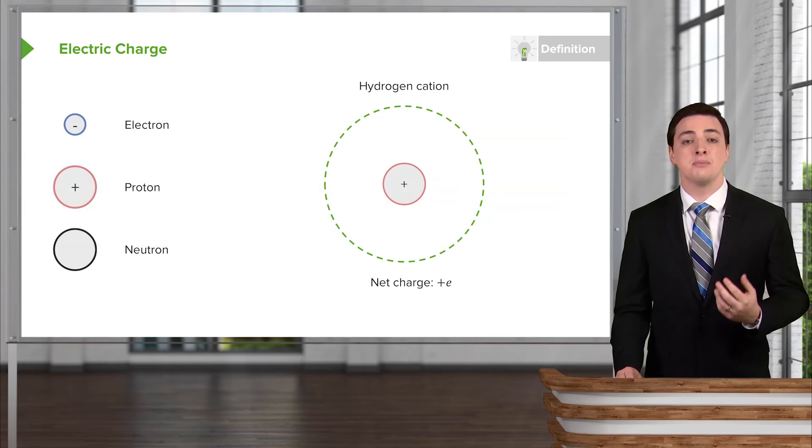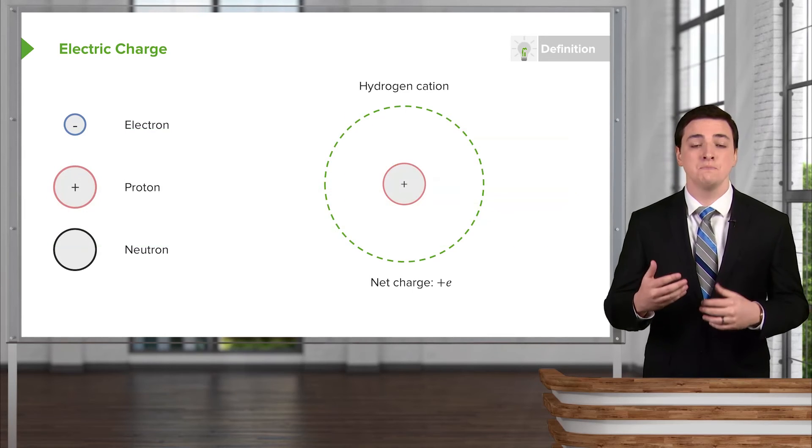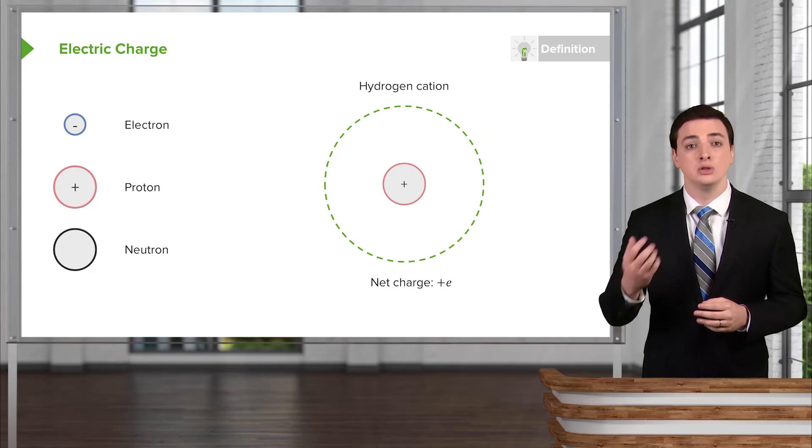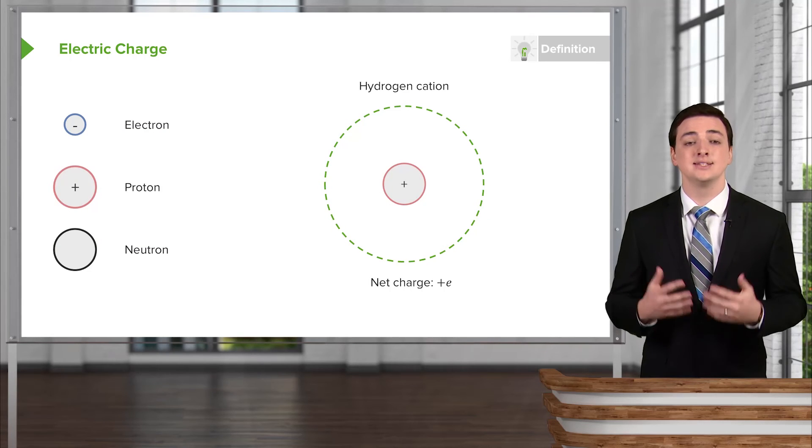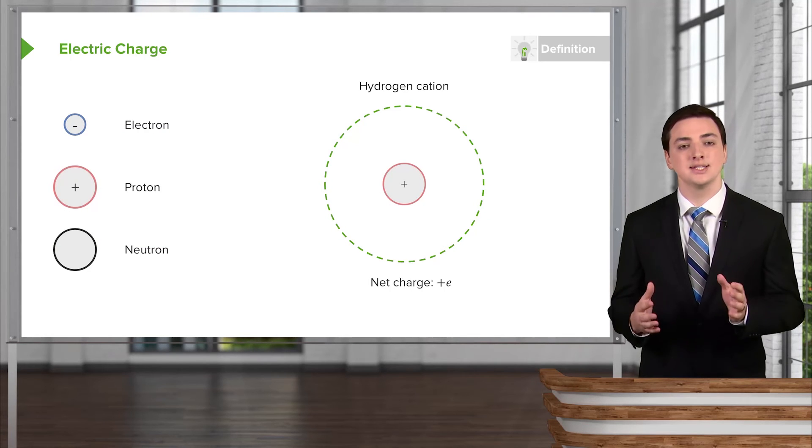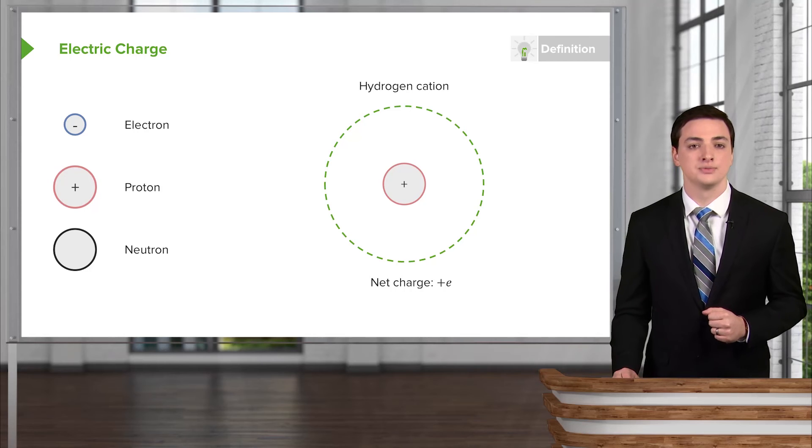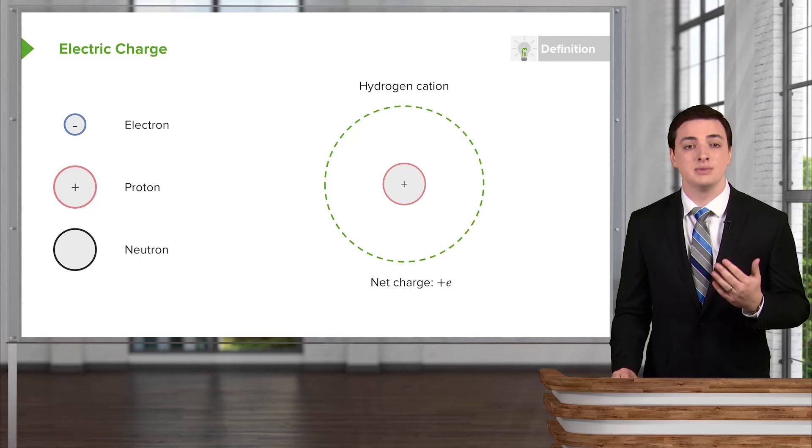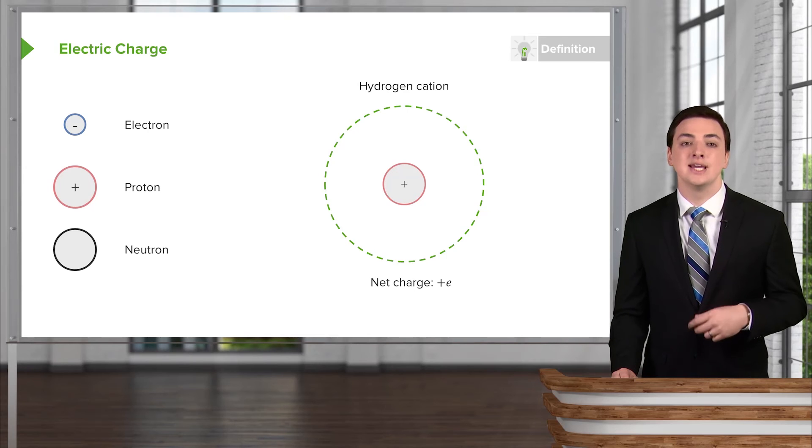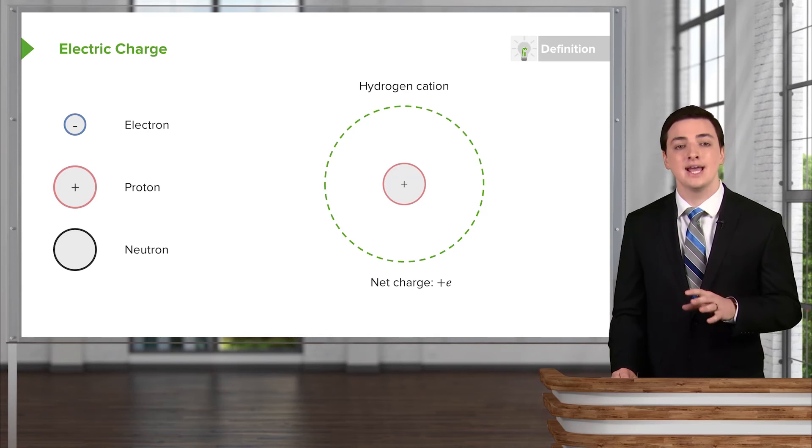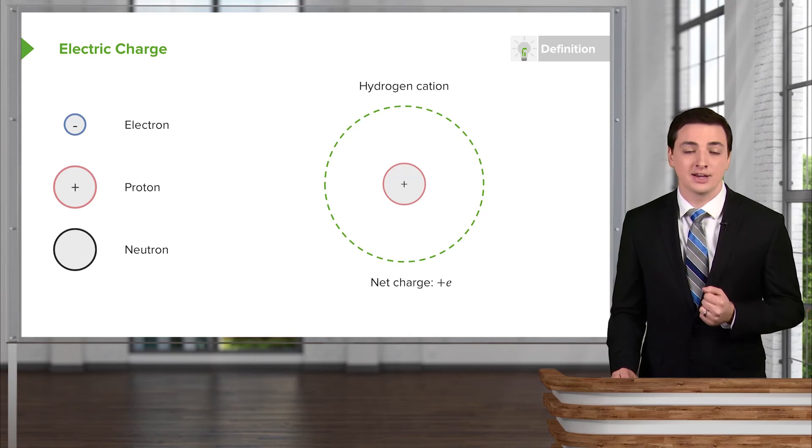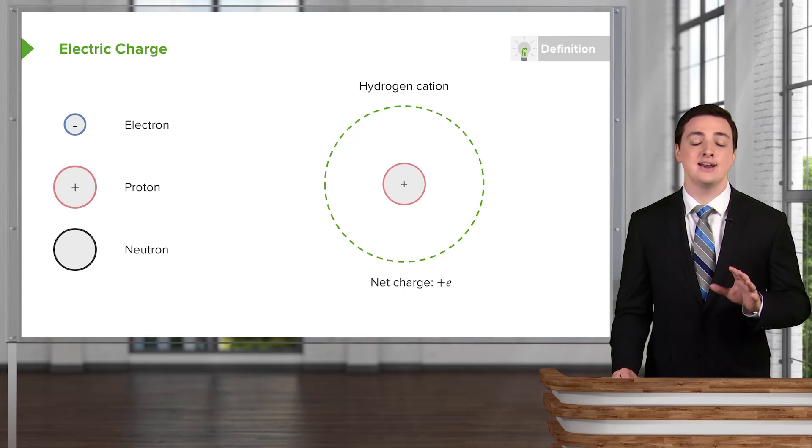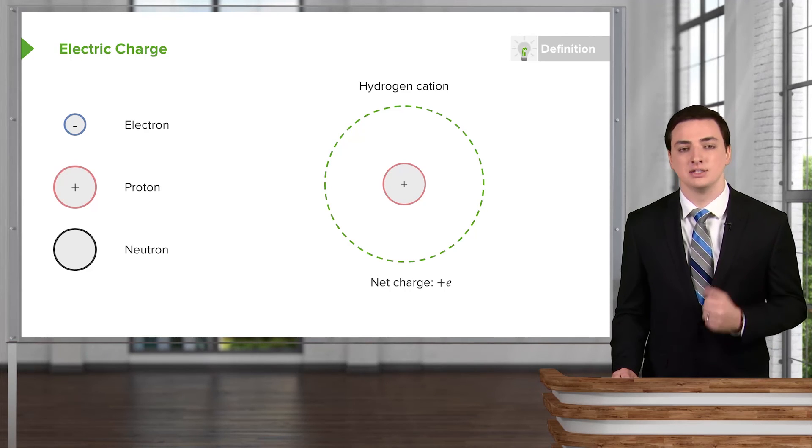On the other hand, we could have the opposite thing happen. Maybe your atom, this hydrogen atom, loses one electron. In that case, it no longer has any electrons while it still has this positive proton charge. If that's the case, then the net charge of the atom as a whole is now positive, and we give it a different name, which is a cation rather than an anion. We only have the mnemonic for an anion, so that one might be easier to remember, and then just always remember the cation is the opposite. It's positively charged.